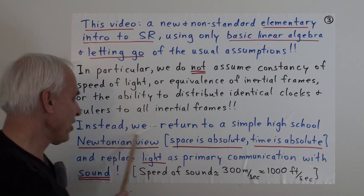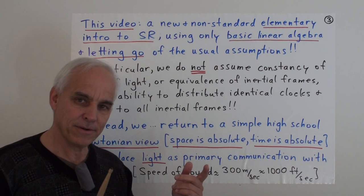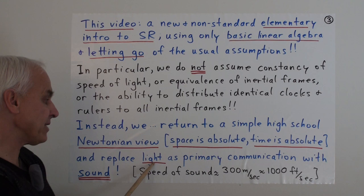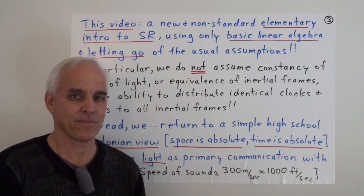So I'm going to show you a mathematical theory of special relativity, essentially. And it's going to turn out that most of the formulas, perhaps the vast majority of the formulas, are already captured in this mathematical version. But the mathematical version is somewhat more general, and more broader. And maybe it's logically prior to the physical theory. So we're going to instead return to a simple high school Newtonian view. That's going to be our starting point. Space is absolute. Time is absolute. We're going to go back several centuries. And more surprisingly, I'm going to replace light as the primary communication with sound.